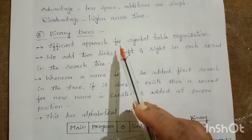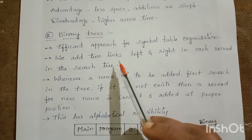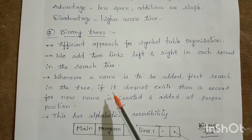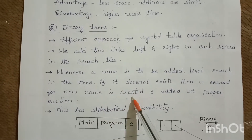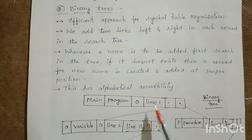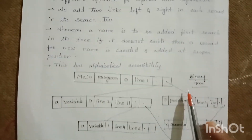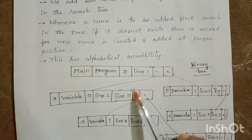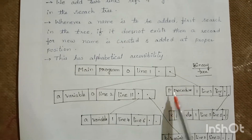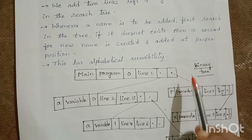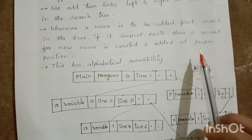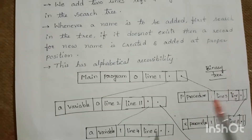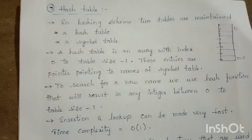Binary trees are an efficient approach for symbol table organization. Two links — left and right — are added in each record of the search tree. Whenever a name is to be added, it is first searched in the tree; if it does not exist, a record for the new name is created and added at the proper position. Binary trees have alphabetical accessibility.